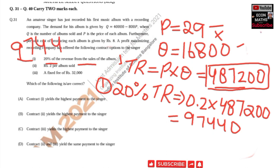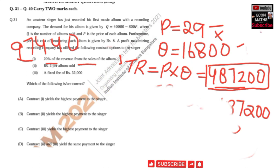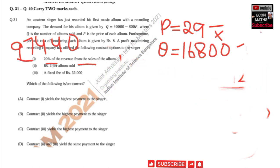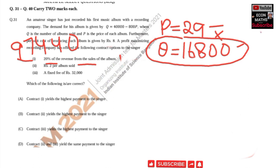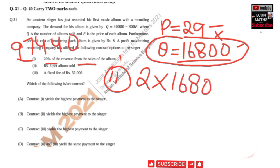The second contract is rupees 2 per album sold. The number of albums sold is 16,800, so the second contract pays 2 × 16,800 = 33,600. The second contract gives the singer rupees 33,600.